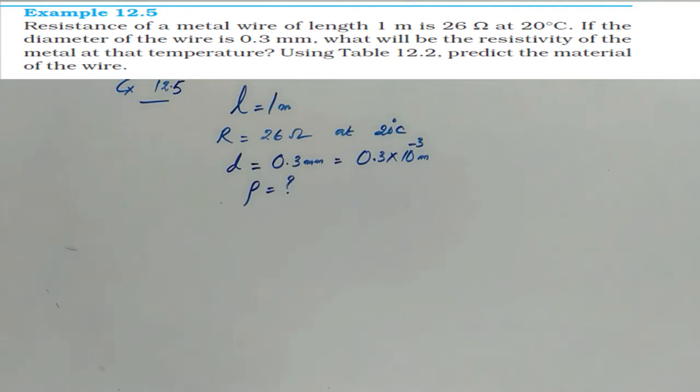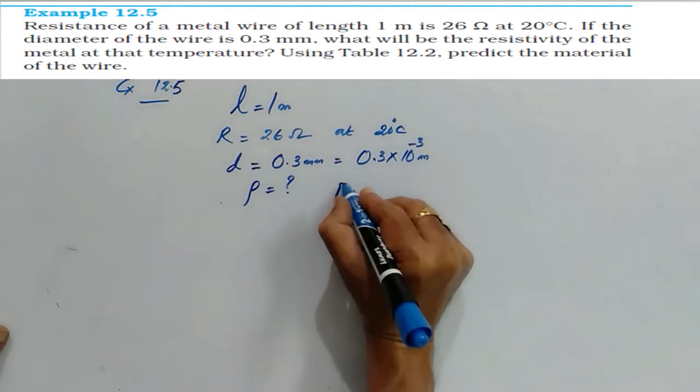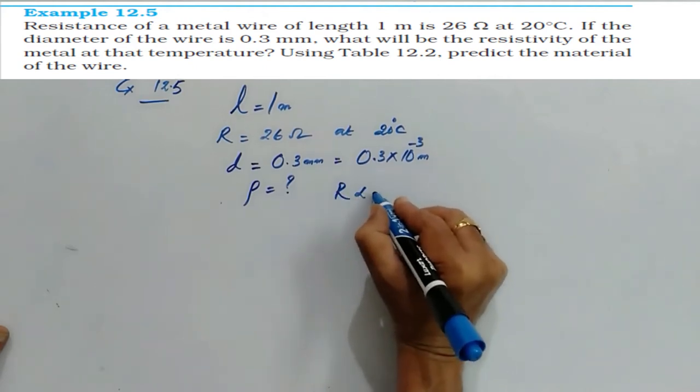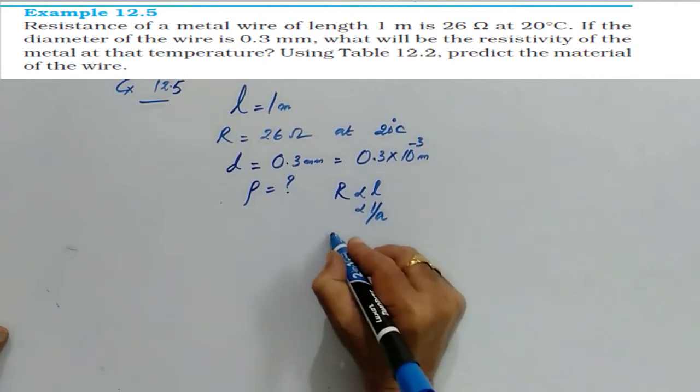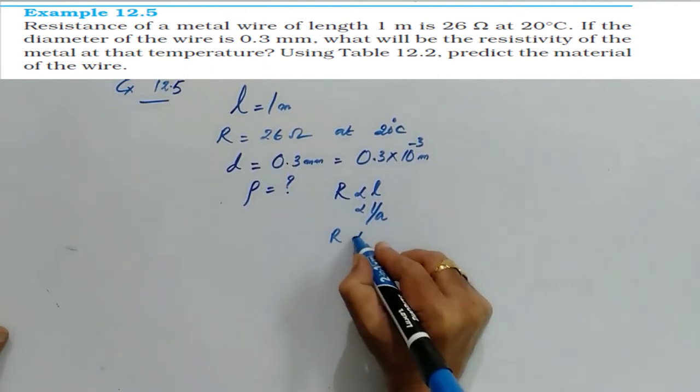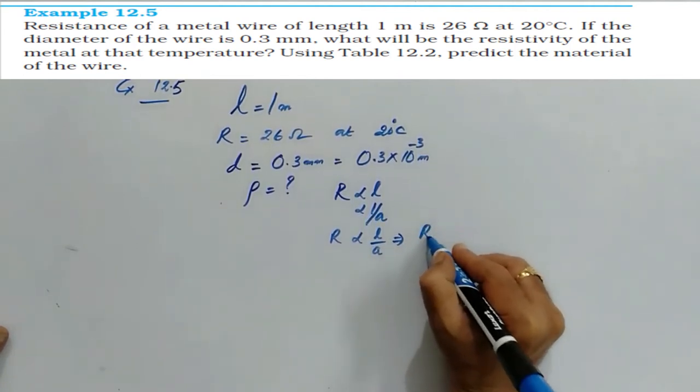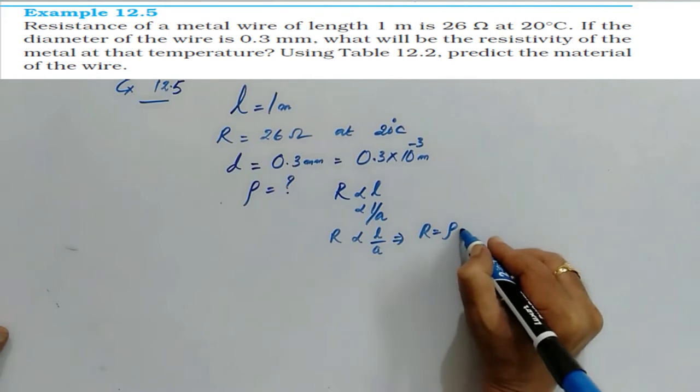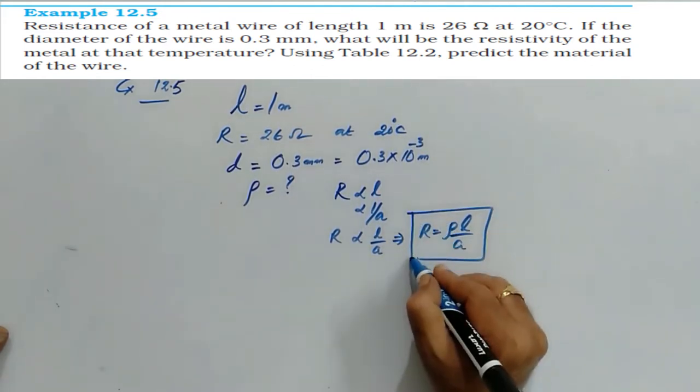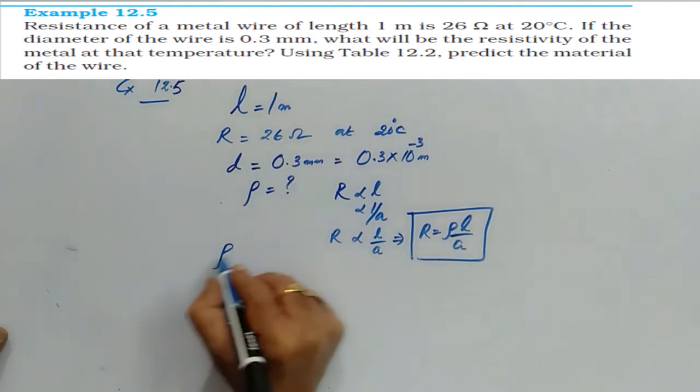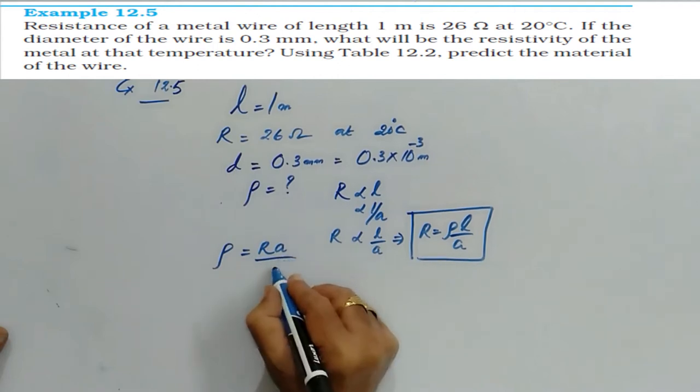Again, we know that R is directly proportional to L, inversely proportional to area of cross section. Therefore, R is directly proportional to L by A. R, you can write R is equal to Rho L by A. So from this formula, Rho is equal to R A by L.